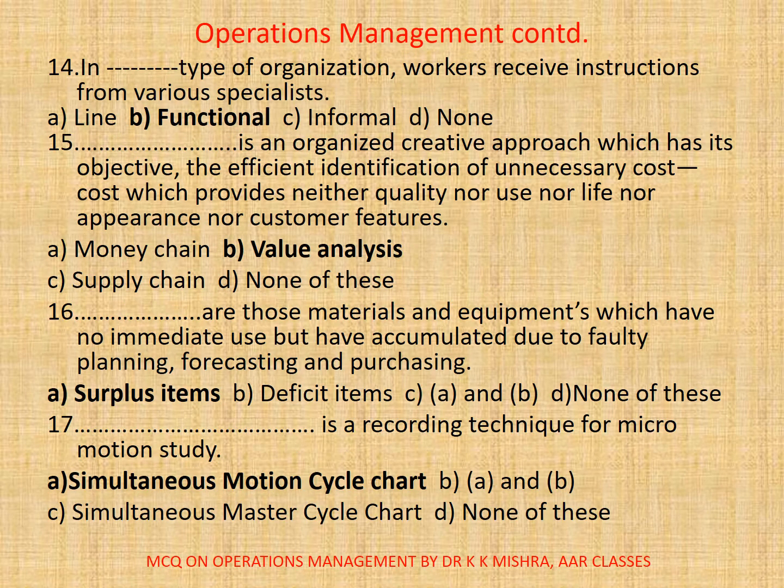14. In dash type of organization, workers receive instructions from various specialists. A. Line. B. Functional. C. Informal. D. None. The correct option is B. Functional.